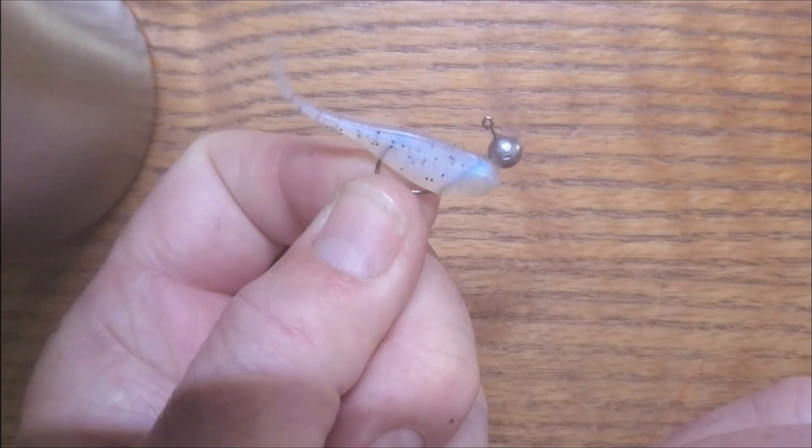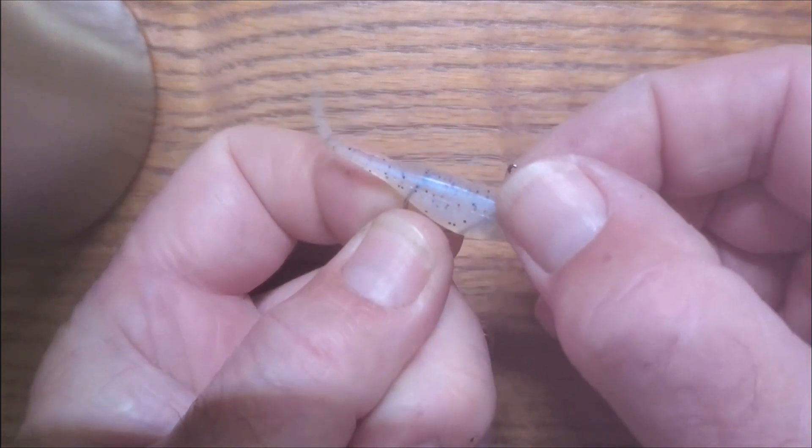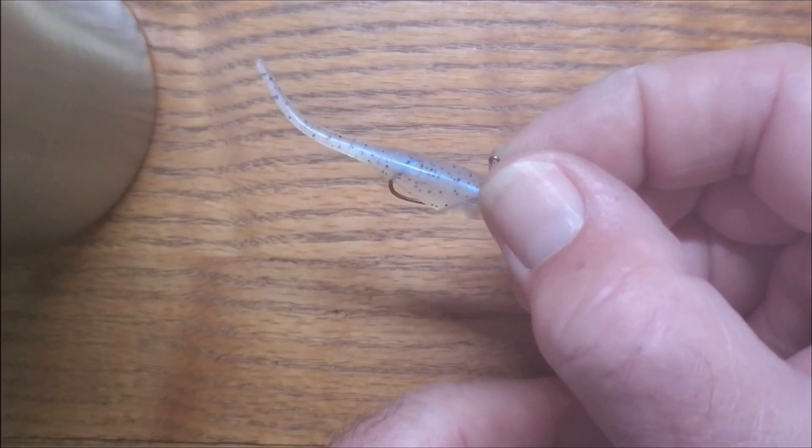And then what you've got is a totally weedless Bobby Garland bait that you can fish through structures and tops and all that stuff.